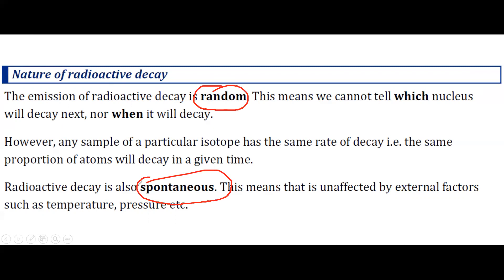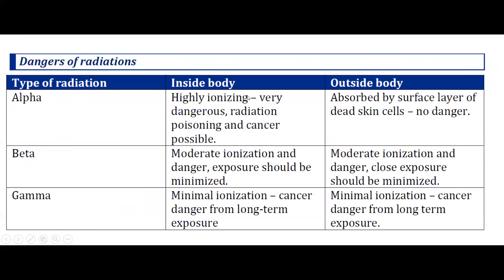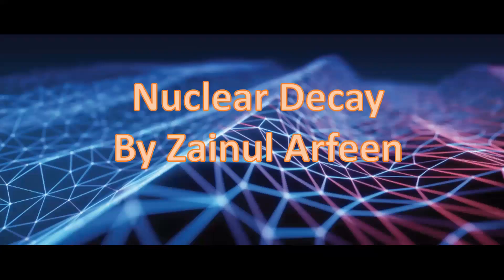Random means there is no order — we cannot tell how many particles will emit radiation next, which particle will emit next, or when the next radiation will come from the source. Spontaneous means it happens by itself and is not affected by changing the temperature, pressure, or state of a radioactive source — converting it between solid, liquid, or gas does not affect the nuclear radiations emitted. The next session will cover the calculation part: activity, half-life, and how to calculate certain values.